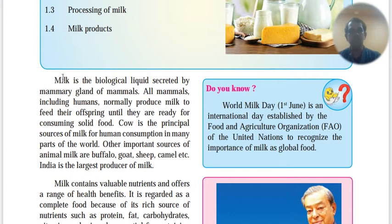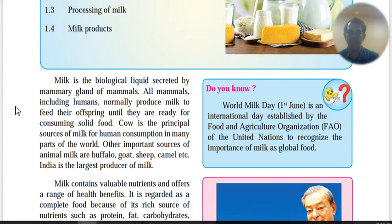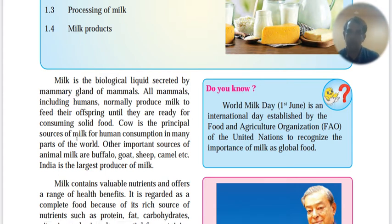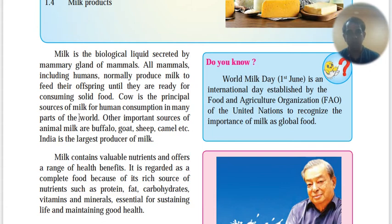Milk is the biological liquid secreted by mammary glands of mammals. All mammals, including humans, normally produce milk to feed their offspring until they are ready for consuming solid food. Cow is the principal source of milk for human consumption in many parts of the world. Other important sources of animal milk are buffalo, goat, sheep, camel, etc. India is the largest producer of milk.